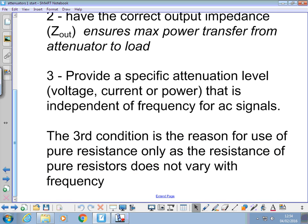The third condition is the reason for use of pure resistance only. Attenuator circuits only have pure resistors because their value doesn't vary with frequency. An attenuator, we want to get the same level of attenuation regardless of the frequency of the input. If we used capacitors or inductors, we'd effectively have an attenuator that varied its attenuation with frequency. We'd have a filter, which is next week's lesson.